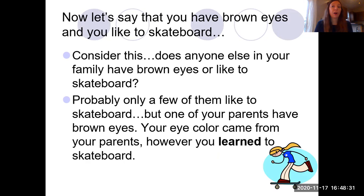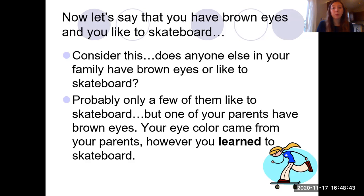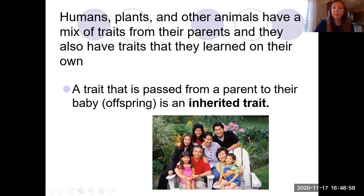Let's say that you have brown eyes and you like to skateboard. Would anyone else in your family have brown eyes and like to skateboard? Probably. Maybe only a few of them like to skateboard, but probably one of your parents would have brown eyes. Your eye color comes from your parents. However, you had to learn how to skateboard, so they didn't have to be interested in skateboarding. Humans, plants, and other animals have a mixture of traits from their parents, and they also have traits that they learned on their own. So a trait that is passed from the parent to the baby — called an offspring — is an inherited trait.